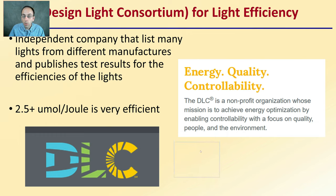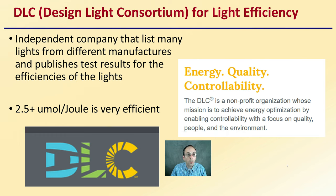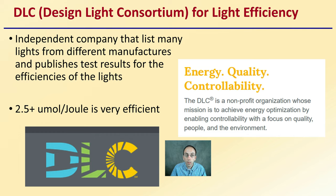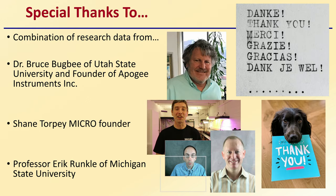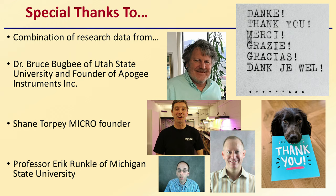In addition, there's something called the DLC — the Design Light Consortium — for light efficiency. It's an independent organization that lists many lights from different manufacturers and publishes test results for their efficiencies. 2.5 and greater micromoles per joule is considered to be a very efficient light. This nonprofit can help provide details about lights you might be considering purchasing so you make the best selection for your grow area. Special thanks to the researchers who contributed to the information presented here, so you can hopefully become an informed consumer when purchasing lights.